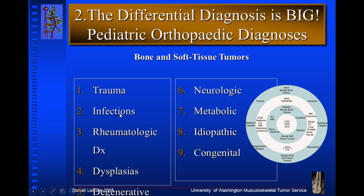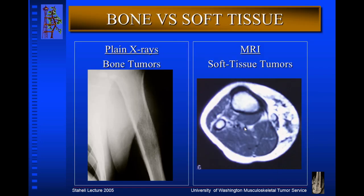When teaching medical students and residents about approaching a diagnosis — a presumptive diagnosis of a hole or an abnormality in bone — some of those might represent subtle fractures. Infections are not uncommon in children. Rheumatological diagnoses like rheumatoid arthritis, dysplasias of bone, degenerative and arthritic conditions can occur, as well as neurologic or metabolic conditions and congenital diagnoses. This huge sphere of possibilities is really only understood best by an orthopedic surgeon who deals with this on a daily basis. We are not talking about soft tissue tumors today — for example, a hemangioma in the soft tissues — nor are we talking about malignant bone tumors.